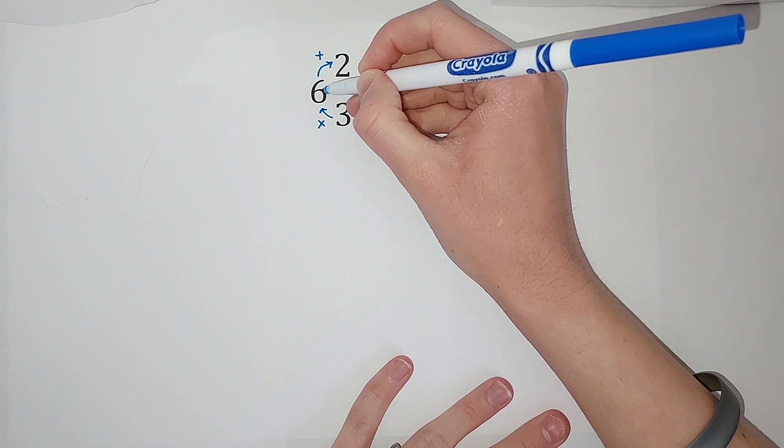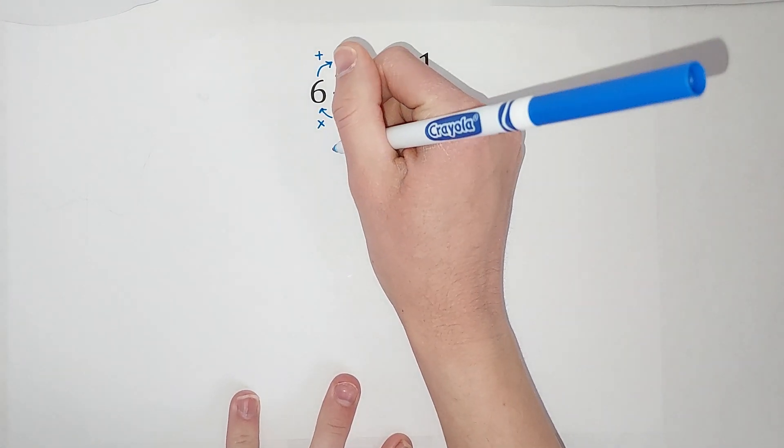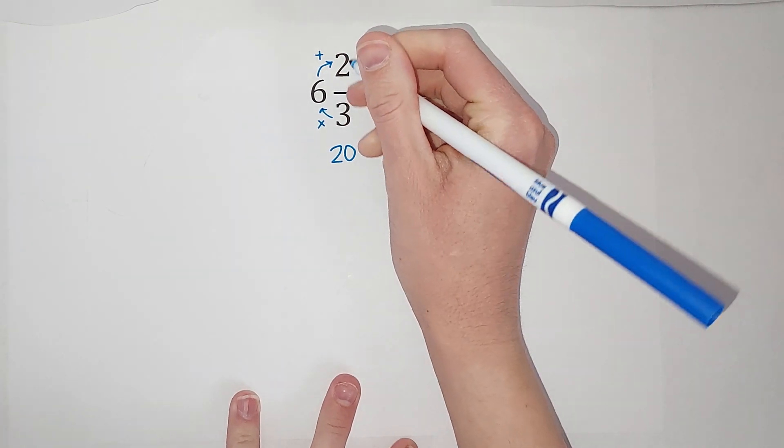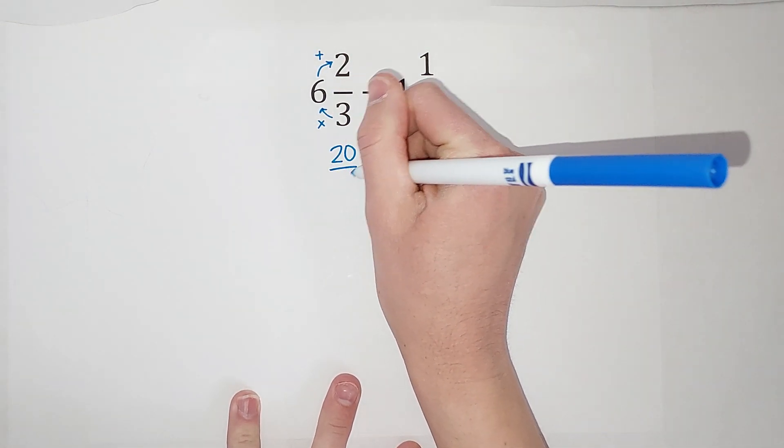So three times six give me 18 plus two gives me 20. And we are still in thirds.